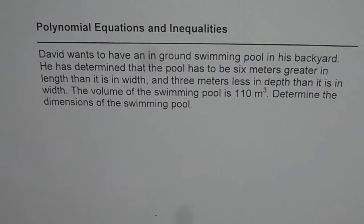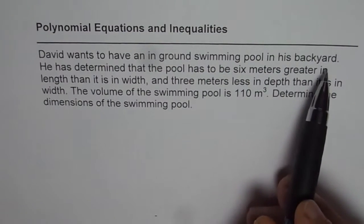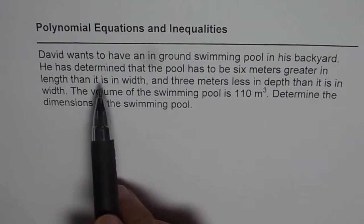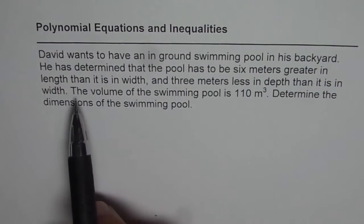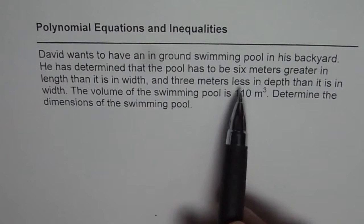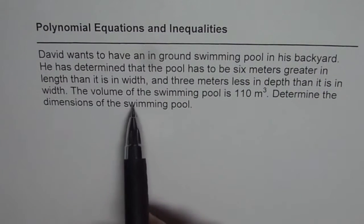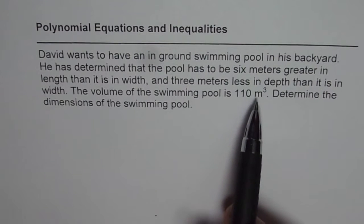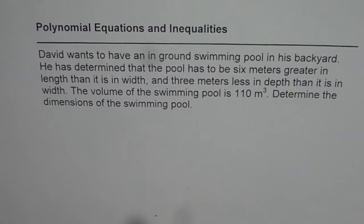The question before us is: David wants to have an in-ground swimming pool in his backyard. He has determined that the pool has to be 6 meters greater in length than it is in width, and 3 meters less in depth than it is in width. The volume of the swimming pool is 110 cubic meters. Determine the dimensions of the swimming pool — don't forget to define your variables.